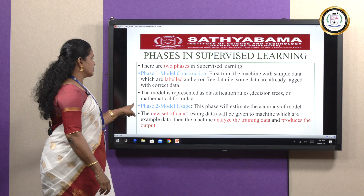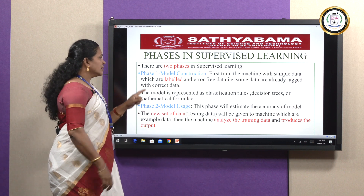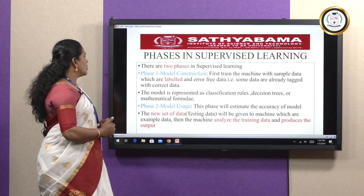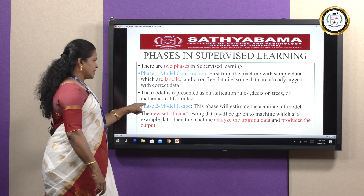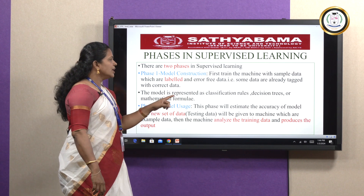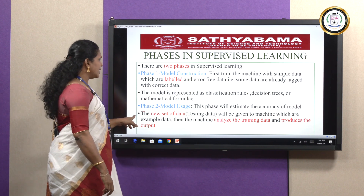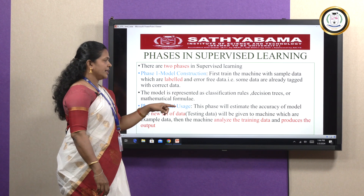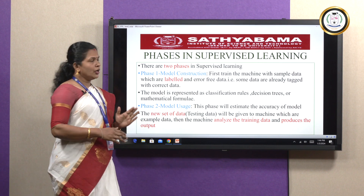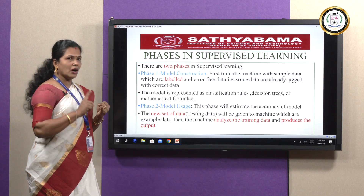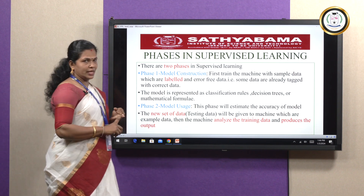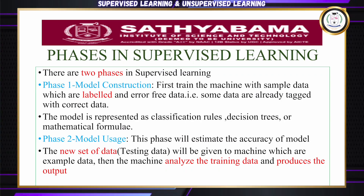Phase two is model usage. This phase estimates the accuracy of the model. New test data is given to the machine, which analyzes the training data and produces the output. So the two phases are model construction, where we train on labeled data, and model usage, where we test the data and produce the output.